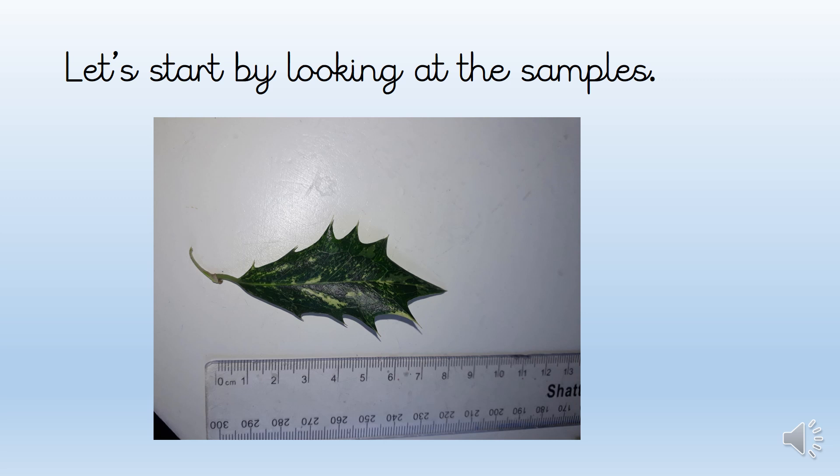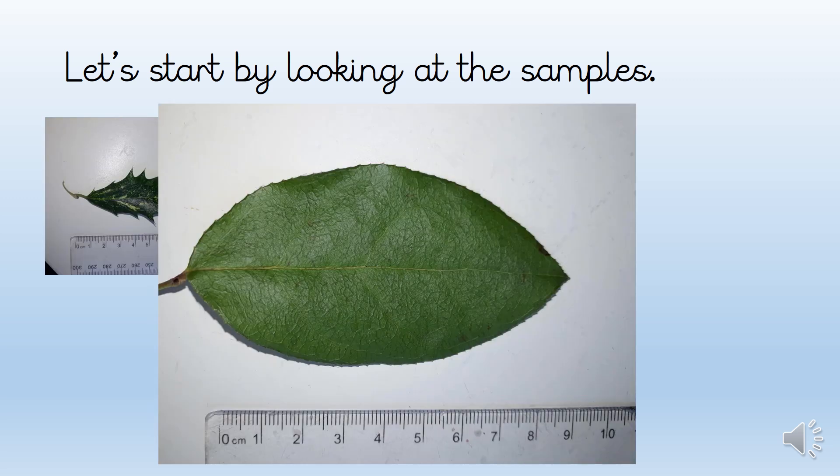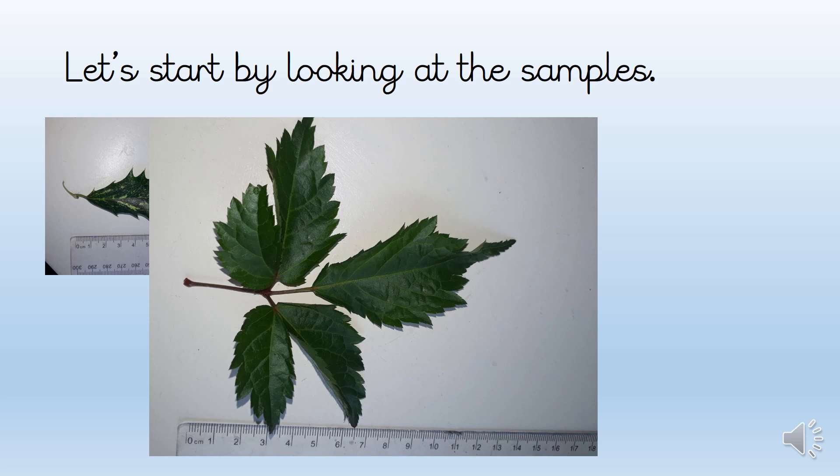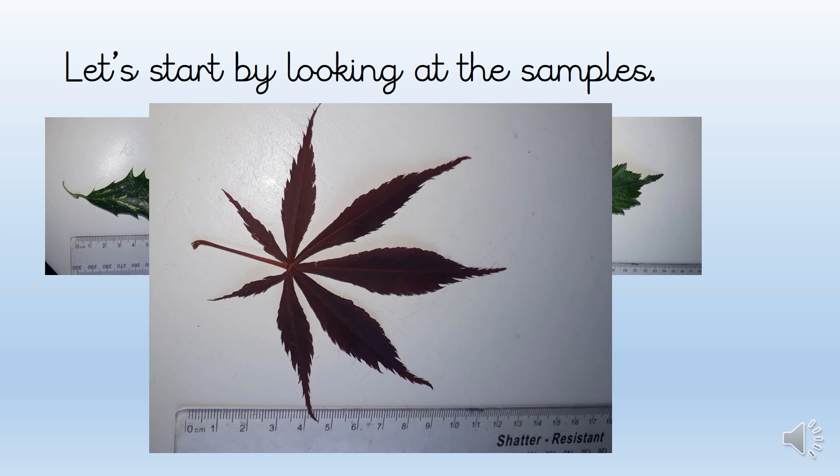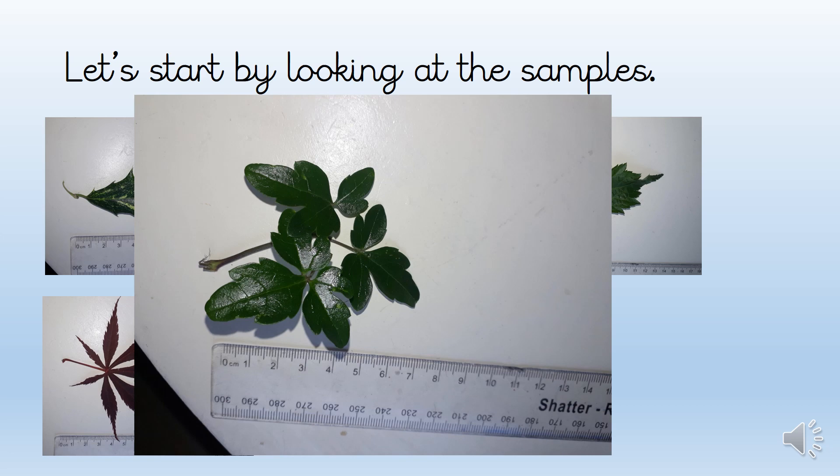Let's start by looking at the samples. These are samples I collected from my garden — I didn't collect them from the park because I didn't know if I was allowed to. I also know whether the plants in my garden are safe for me to pick up. Here's one of the samples. You may know what some of these are, you may not — it doesn't really matter. Do you think Darwin knew what all the samples were? No, he probably didn't. What we have to do is to be able to describe.